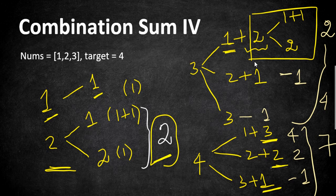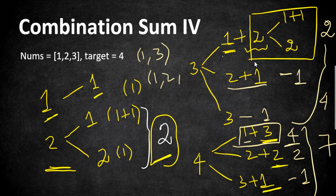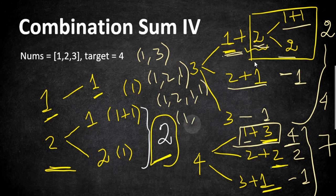The 4 combinations by considering value 1 are: 1,3 — then 1,2,1 — then 1,1,2 — and 1,1,1,1. So these are the 4 combinations we are representing. To solve this cleanly, we are going to have a DP array to solve each sub-problem at each stage and arrive at the bigger solution. Let's see a dry run before getting into the code.